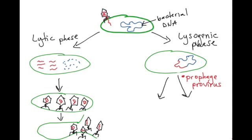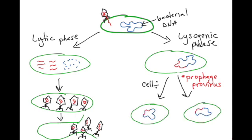As that cell undergoes cell division, it's going to pass that copy of the prophage or provirus onto all of its daughter cells through vertical transmission. It's important to note that during this process, no new bacteriophage or no new virus is being made.